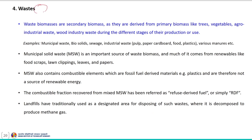Waste biomass are secondary biomasses as they are derived from the primary biomass sources like trees, vegetables, agro-industrial waste, and woody industry waste during different stages of their production or use. Examples include municipal waste, biosolids, sewage, industrial waste and various manures from specific sources. Municipal solid waste is an important source of waste biomass and much of it comes from renewables like food scraps, lawn clippings, leaves and papers.